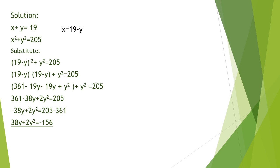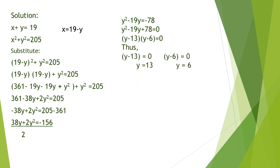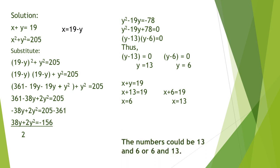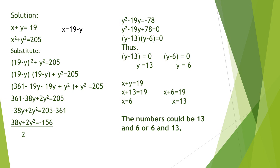Dividing both sides by 2 gives y squared minus 19y equals negative 78. Using the addition property to transfer negative 78 to the left side, the equation becomes y squared minus 19y plus 78 equals 0. Factoring gives y minus 13 times y minus 6 equals 0, so y equals 13 and y equals 6. Substituting back into x plus y equals 19, the corresponding x values are 6 and 13. Thus, the two numbers are 13 and 6.